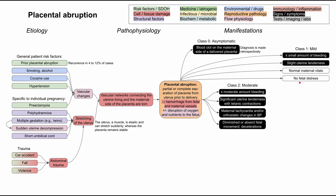Class two is considered moderate, and this is when it starts to get serious. You can have up to a moderate amount of bleeding, significant uterine tenderness, and titanic contractions. In class two, you start to have abnormal maternal vital signs — tachycardia and/or orthostatic changes in blood pressure; mom's blood pressure might drop drastically when she stands up. Baby will also start to show distress, with decelerations or diminished or even absent fetal movements. You also have abnormal lab values in class two: notably hypofibrinogenemia — low fibrinogen in the blood.